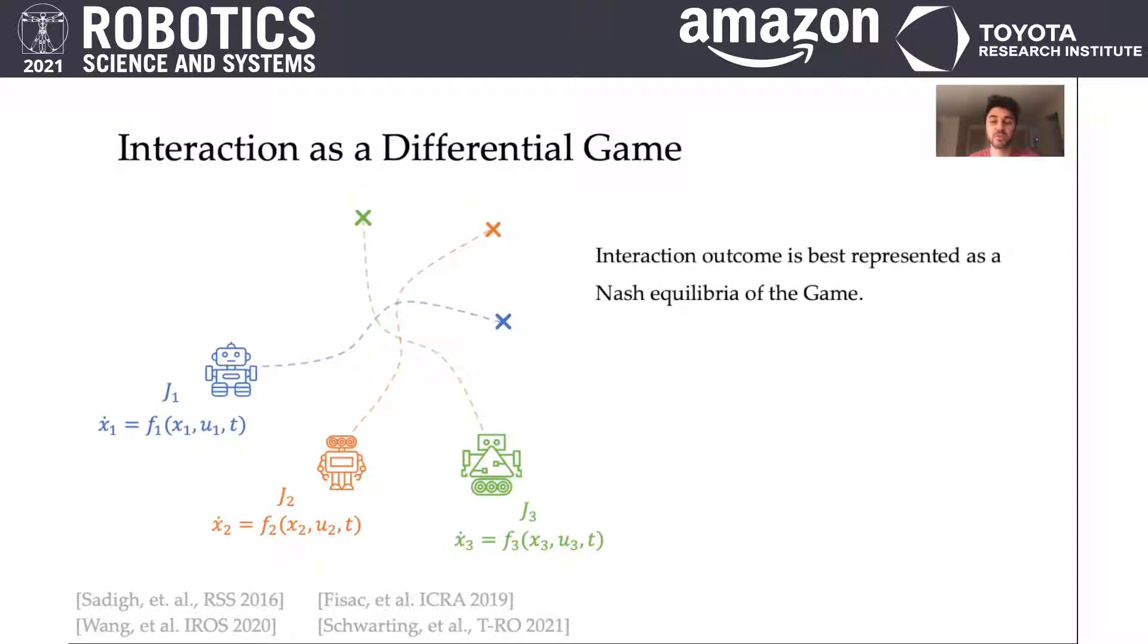However, solving Nash equilibria for differential games is actually solving coupled optimal control problems. And because of this coupling, and also non-linearities in system dynamics, finding a Nash equilibrium for a differential game is hard.